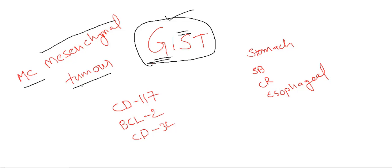This is the most common mesenchymal tumor of the GI tract. The most common site for GIST is stomach, followed by small bowel, colorectum, and esophageal areas. Stomach is the most common area.